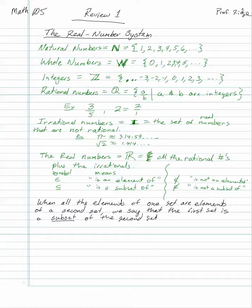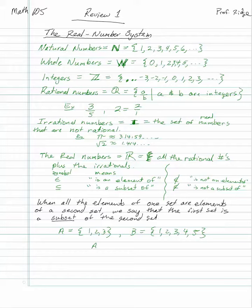A subset means all the elements of one set are elements of the second set. For example, if A is the set {1, 2, 3} and B is the set {1, 2, 3, 4, 5}, then A is a subset of B because everything in A — 1, 2, 3 — is also in B. But B is not a subset of A because B has extra numbers.